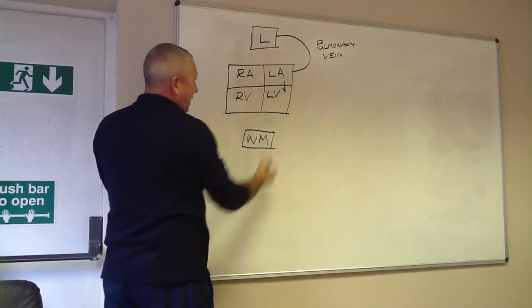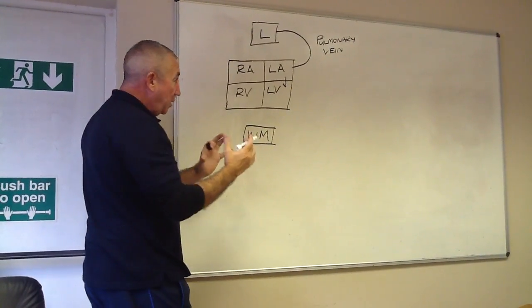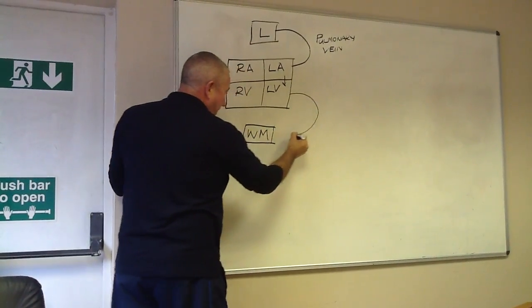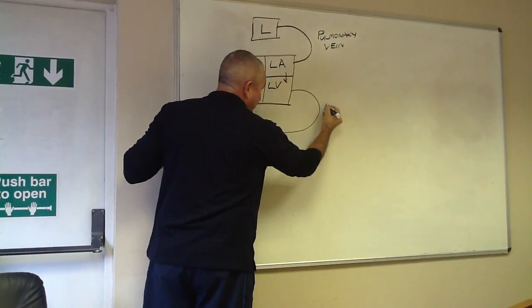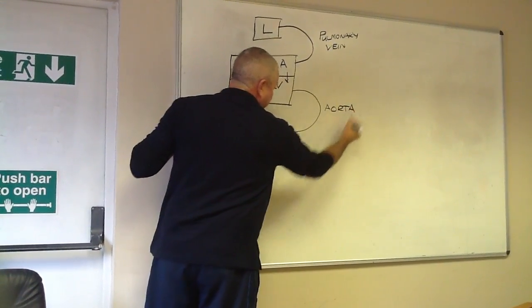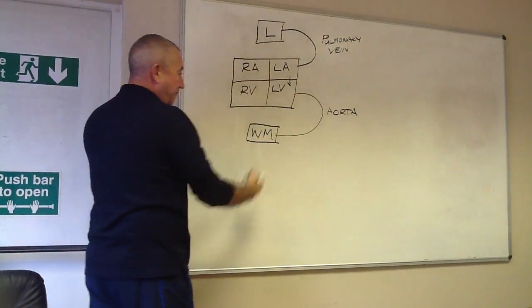The blood travels down into the left ventricle. The left ventricle then contracts and forces the blood out via the aorta, which is by the way the largest artery in the body. Remember, arteries take blood away from the heart.